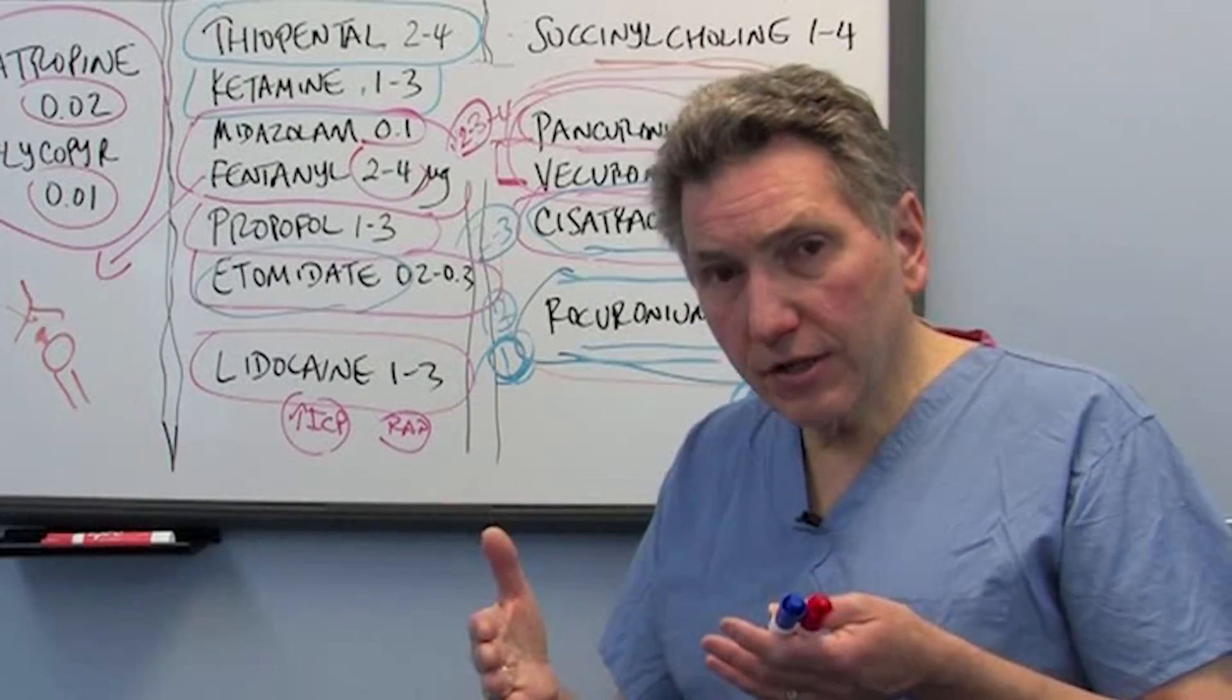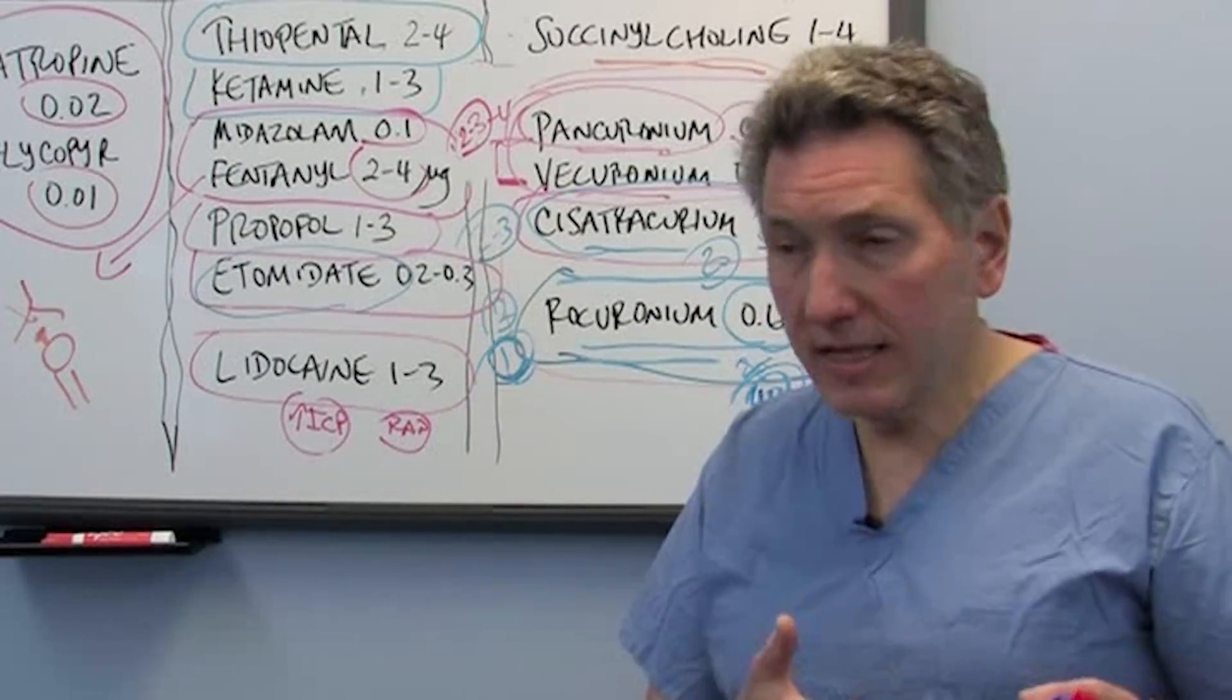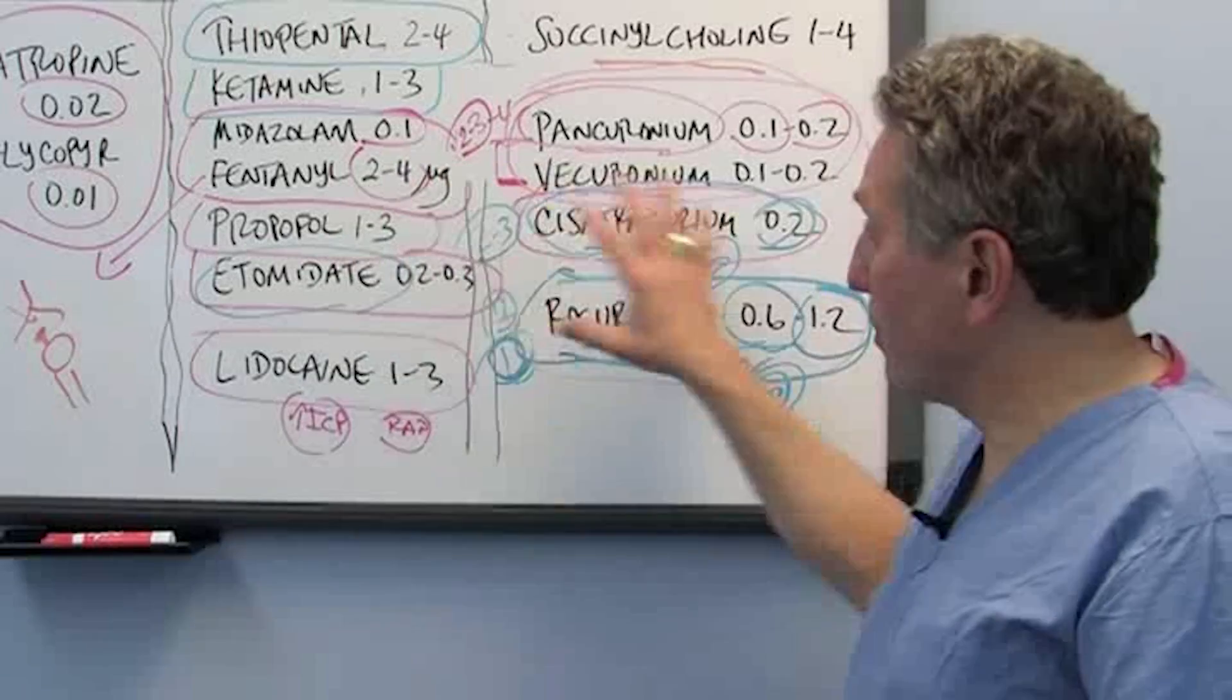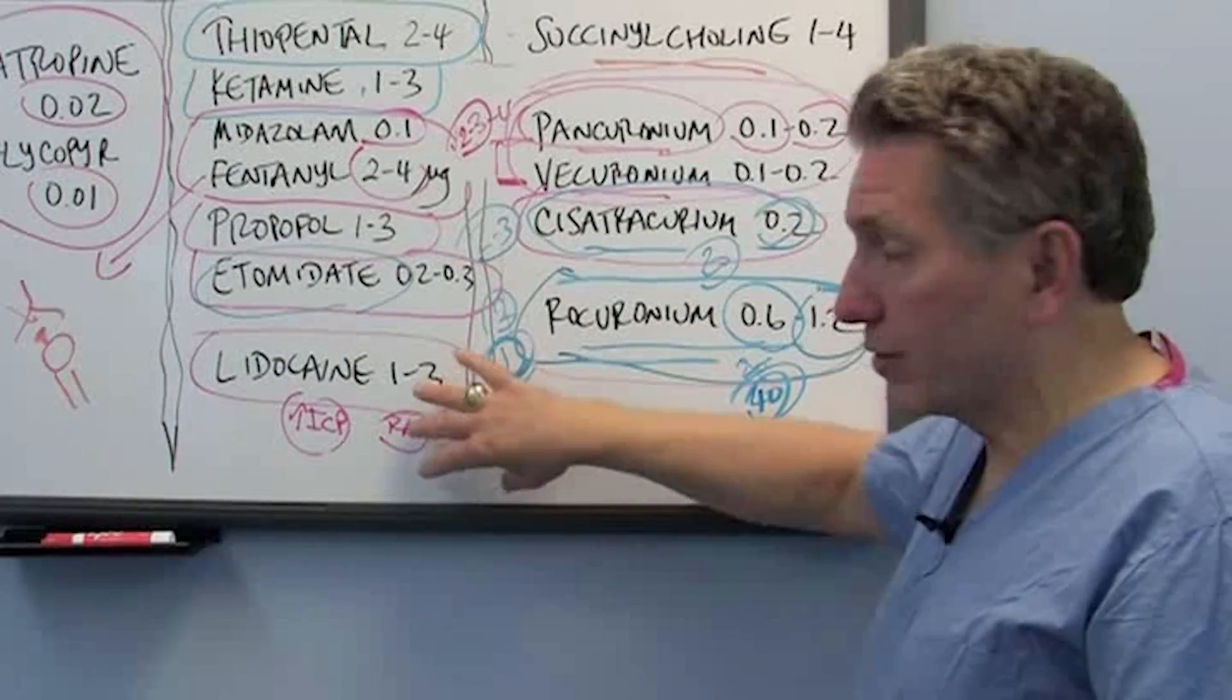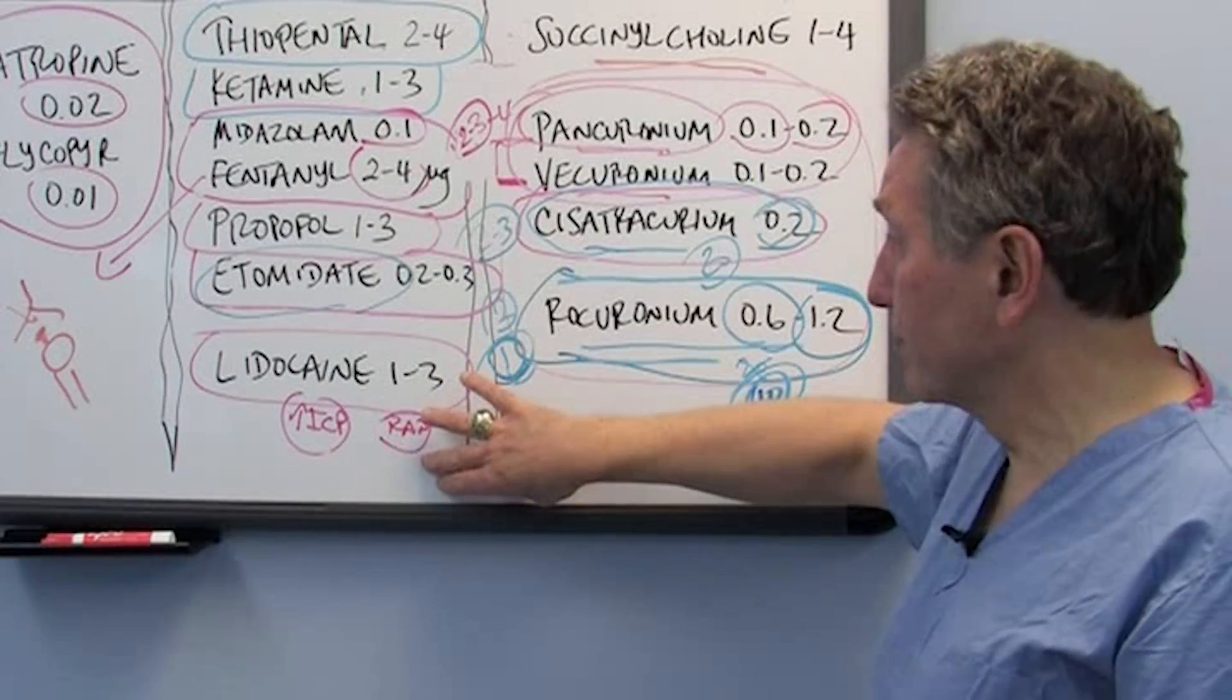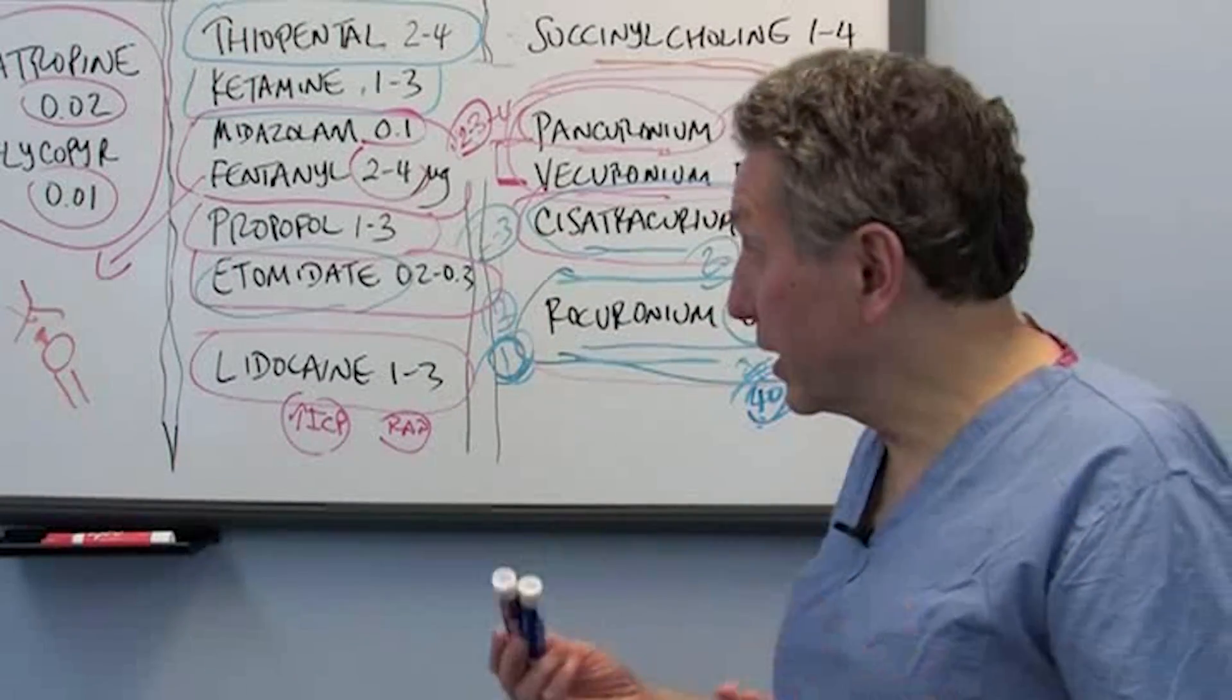So the rapid sequence induction isn't that much different from the standard induction, except for the pre-oxygenation, which frankly you may well do with any intubation as well. But this rapid sequence of I'm going to sleep, I'm going to be paralyzed, and you don't have the little break to make sure that you can ventilate the patient, which is probably the risky part of this rapid sequence procedure. You're just assuming that you can get the tube in. Other than that, the drugs are very similar.